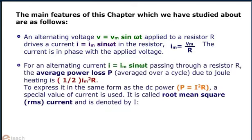For an alternating current I equals Im sin ωt passing through a resistor R, the average power loss P due to Joule heating is as shown. To express it in the same form as the DC power, P equals I squared R, a special value of current is used. It is called root mean square current and is denoted by I as shown.